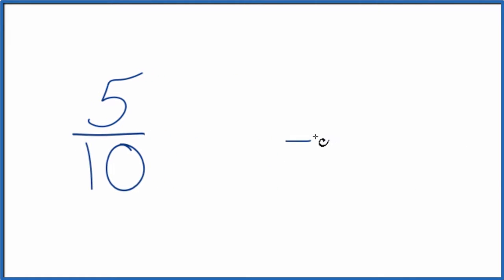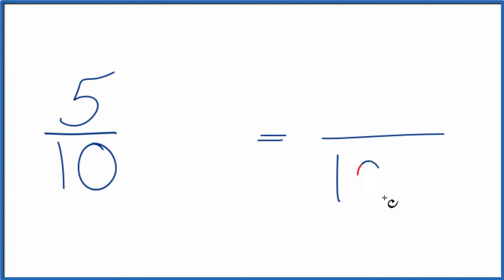we could get the denominator to equal 100. So 10 times 10 equals 100. But we also have to multiply the numerator by 10 as well. That's because 10 over 10 equals 1. We're just multiplying by 1, which doesn't change the value, just the representation.